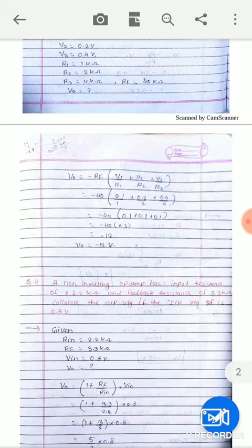Value substitute: minus 40 in place, addition, 0.1, 0.2 upon 2, minus 0.1 plus 0.1. Total answer: final Vo is equal to minus 12 volts.